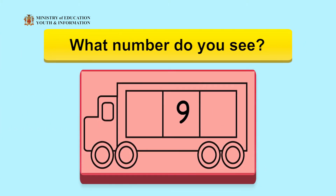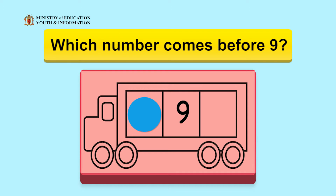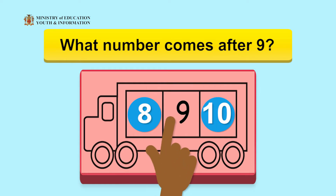Look carefully at the number here. What number is it? Yes! It is the number 9. Which number comes exactly before the number 9 when we are counting by 1? Awesome! The number 8. What number comes exactly after the number 9 when we are counting by 1? Well done! The number 10. Let's call these numbers now. 8, 9, 10.